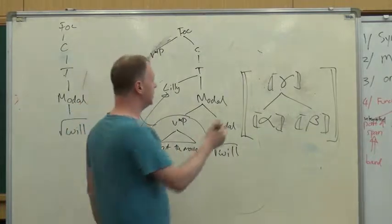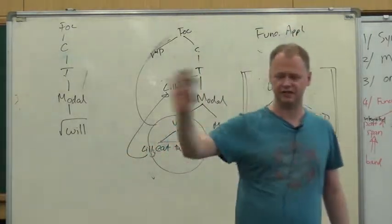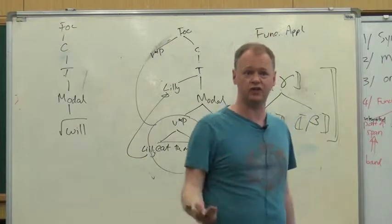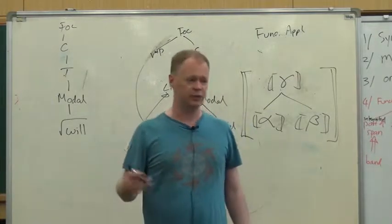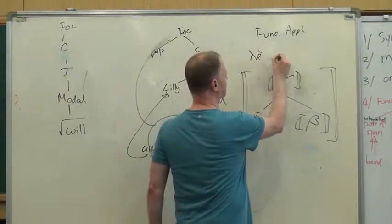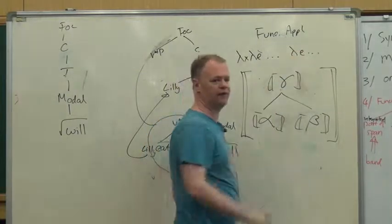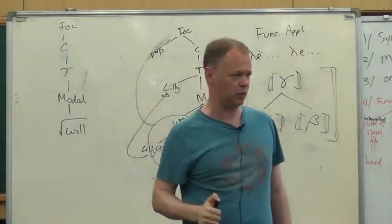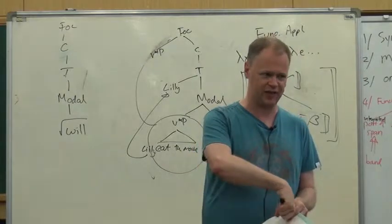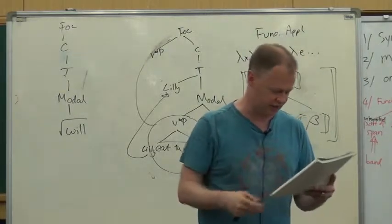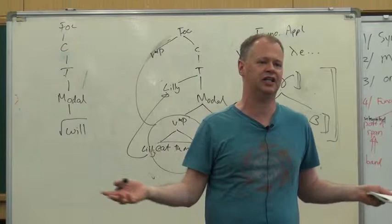We talked earlier on about different ways you can put things together in the semantics. Normally we put things together by functional application, which just says: take the functions and the arguments, stick them together. There are other ways of doing it though. Kratzer motivates this thing she calls event composition, or event identification, which says: you've got two things which are predicates of events — stick them together. And there are various other kinds of composition modes. I'm actually somewhat suspicious about event identification, but we'll adopt it just now.